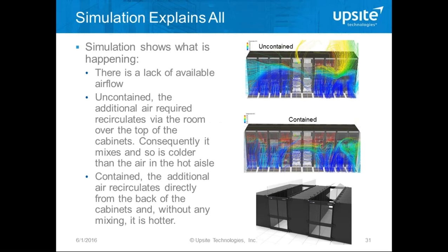When you have a situation like this, one thing to consider is a flexible containment system — such as an aisle lock system — which allows you to choose what parts of the containment to use, and in some cases allows the top of the aisle to be partially open. This is where simulation can help understand the best approach, and a modular containment system provides the opportunity to be flexible about how we improve the airflow.